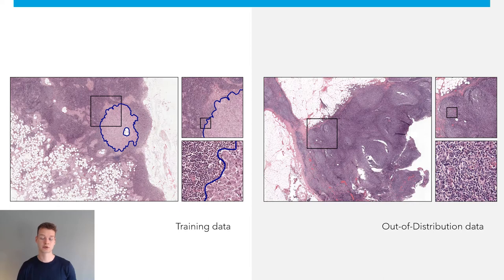This is, of course, also important for the field of digital pathology. Therefore, in this work, we consider models trained to detect breast cancer metastasis on lymph node tissue. We would like to see high accuracy values for this task during inference. However, we would also like to see the ability to detect out-of-distribution data — in this case, lymph node tissue diagnosed with lymphoma.